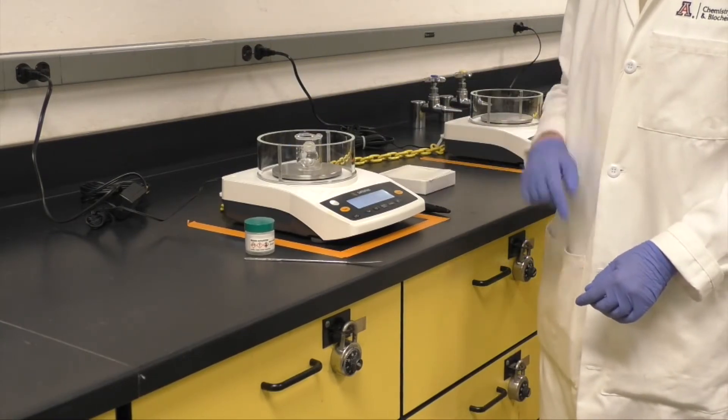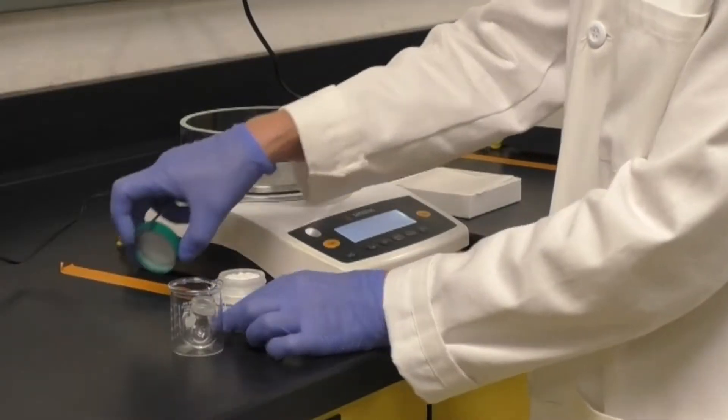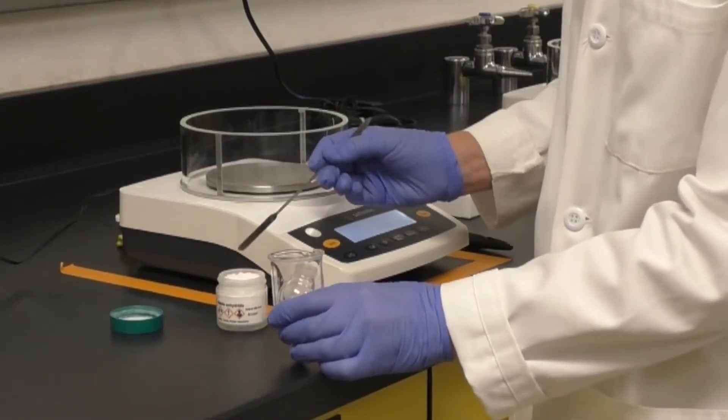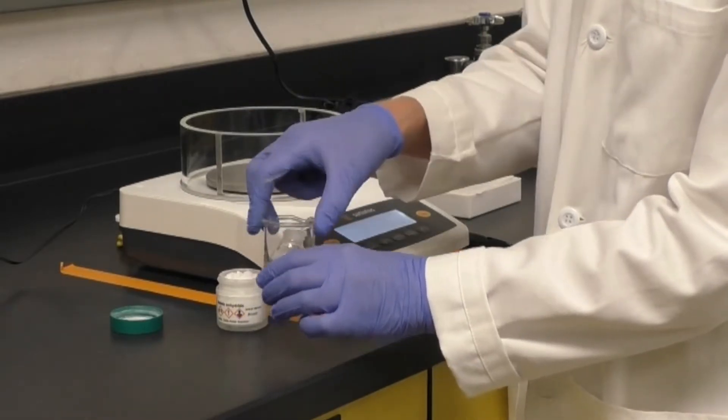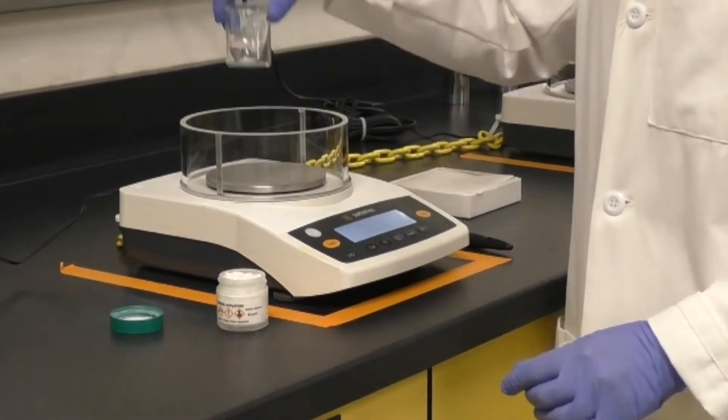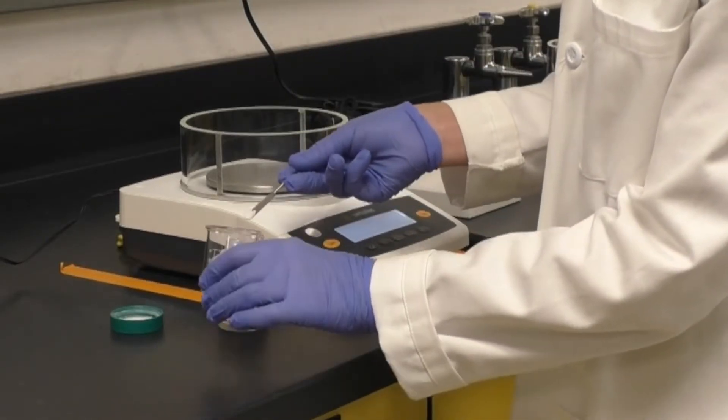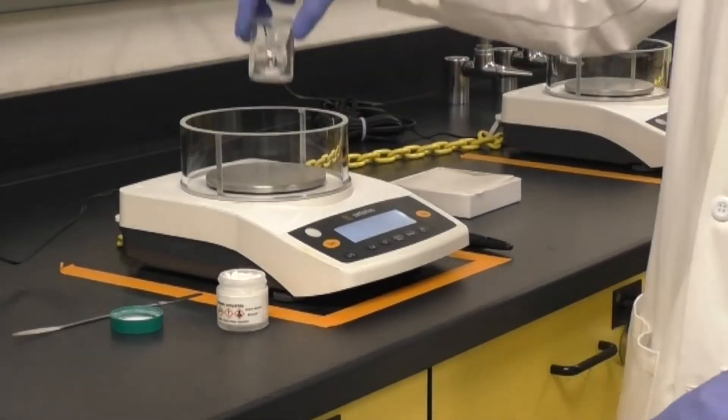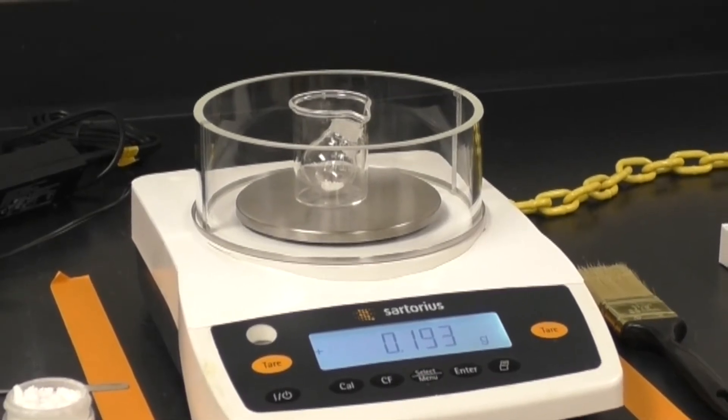Weigh out 180 to 200 milligrams of maleic anhydride into the 10 milliliter round bottom flask. Once you have your exact weight, calculate the volume in milliliters for one equivalent of 2,3-dimethyl-1,3-butadiene. Record your masses in the data table in your lab manual.